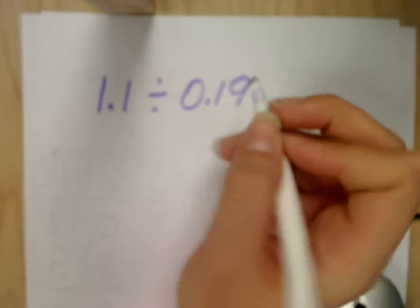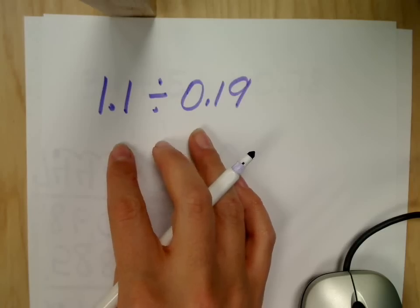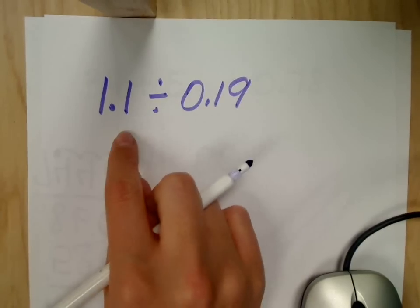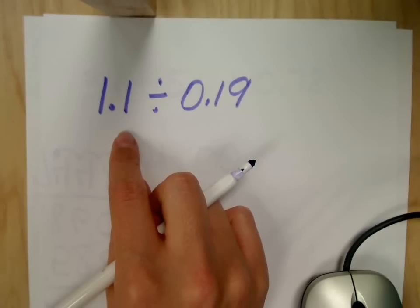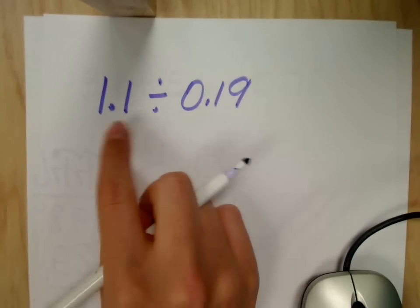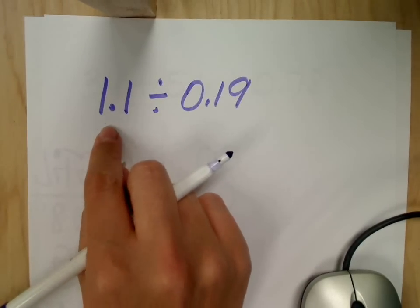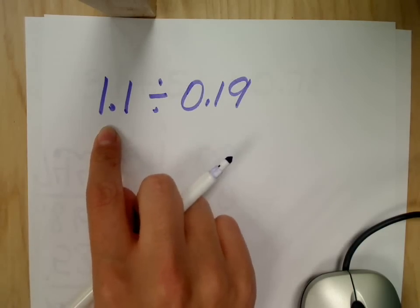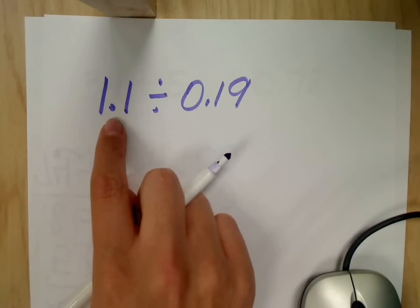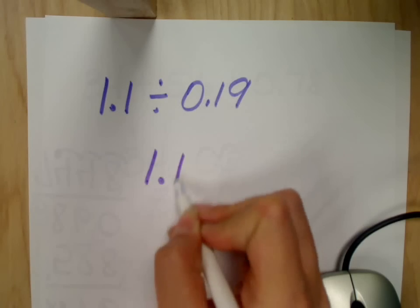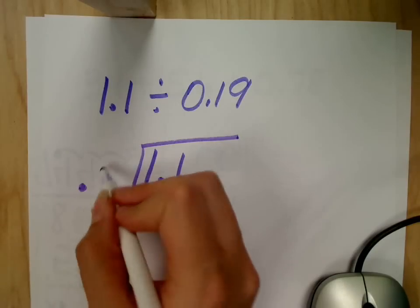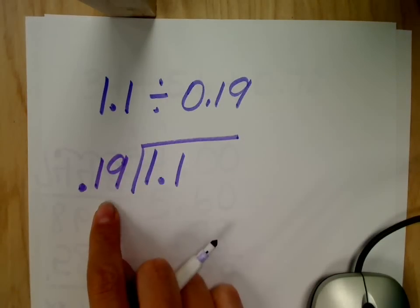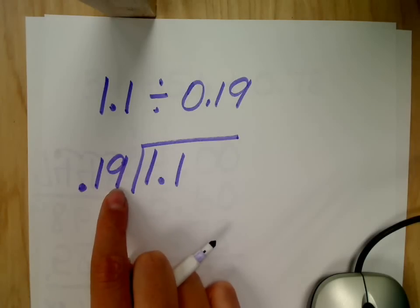One and one-tenth divided by nineteen-hundredths. So which of these numbers goes inside? One and one-tenth. This first one is always inside. Remember I talk about you're there to meet your favorite person in the entire world, a celebrity or whoever. You want to be the first person inside that room. So one and one-tenth goes inside, and this number is on the outside. Something wrong. What's my rule here? You can't have the decimal. You have to move your decimal so that your number is only a whole number.